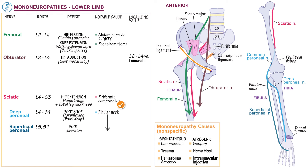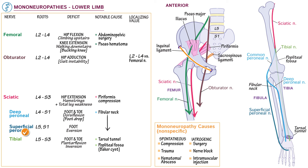Involvement of the short head of the biceps femoris localizes the neuropathy to proximal to the fibular head. Next, show that the tibial nerve, supplied by L5 to S3, continues straight down the posterior leg to innervate the posterior leg and foot muscles, so weakness causes failure of foot and toe plantarflexion and foot inversion — there is inability to stand on the ball of the foot. Note the important distal tibial nerve compression site at the tarsal tunnel, and the proximal compression site at the popliteal fossa especially from a Baker cyst, which can compress the popliteal neurovascular bundle and cause vascular compression signs of edema and discoloration.